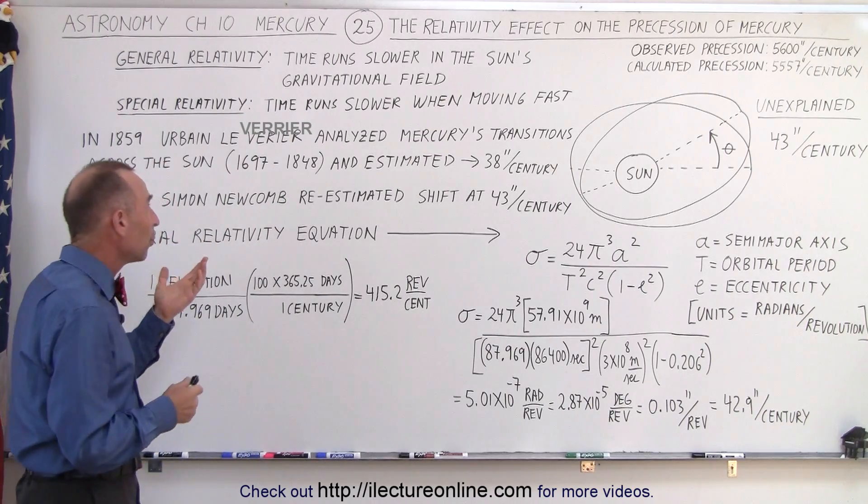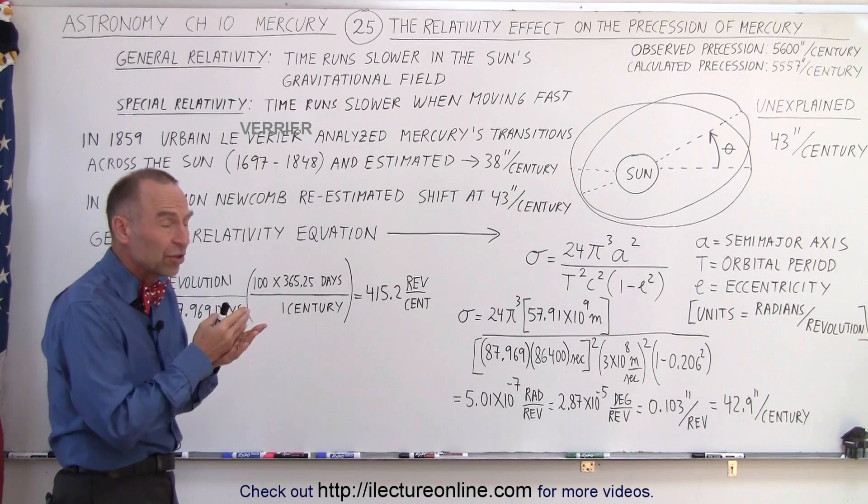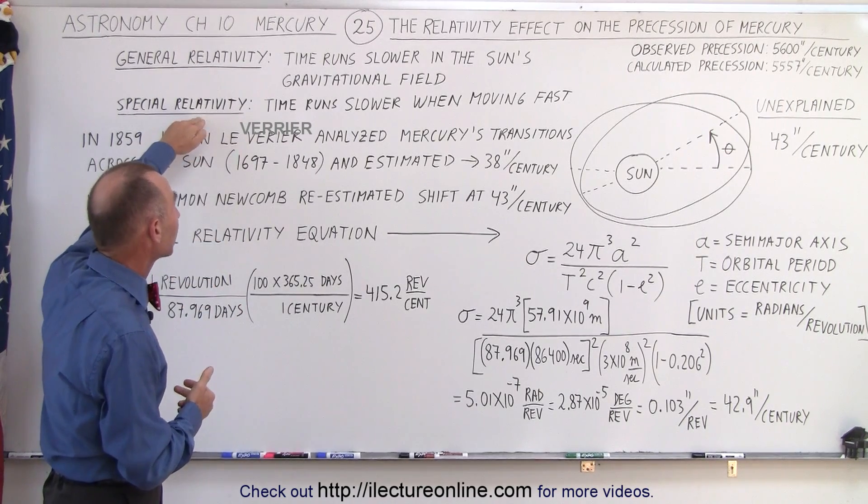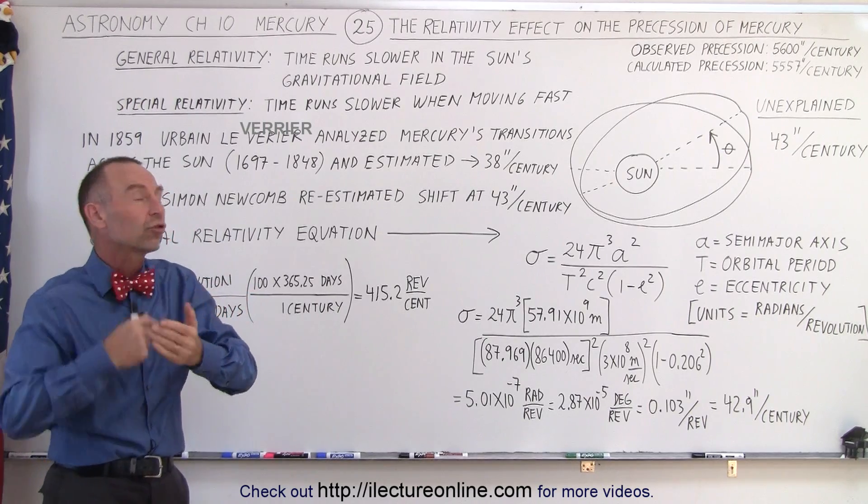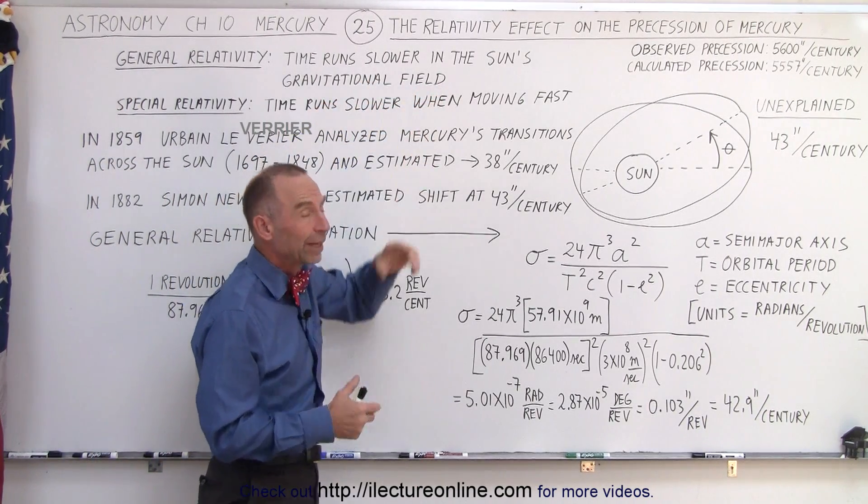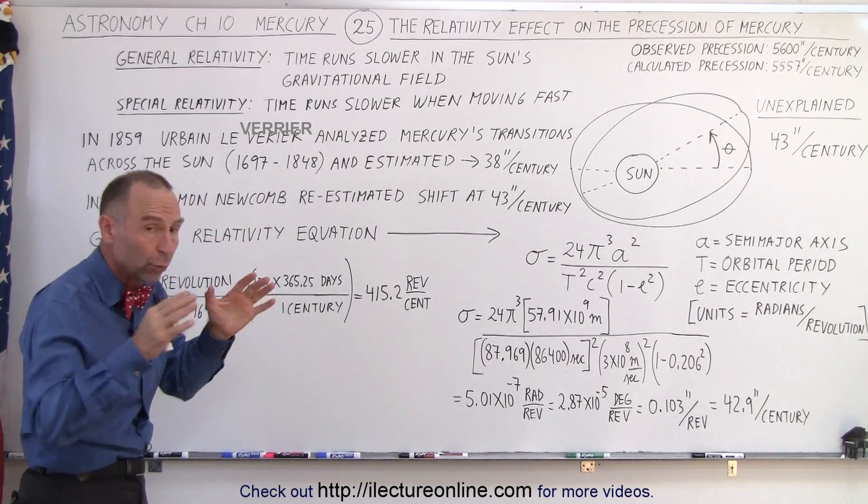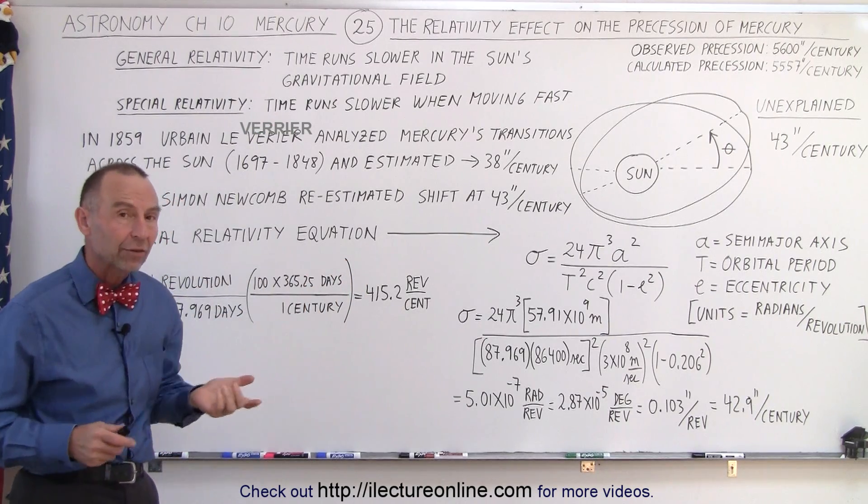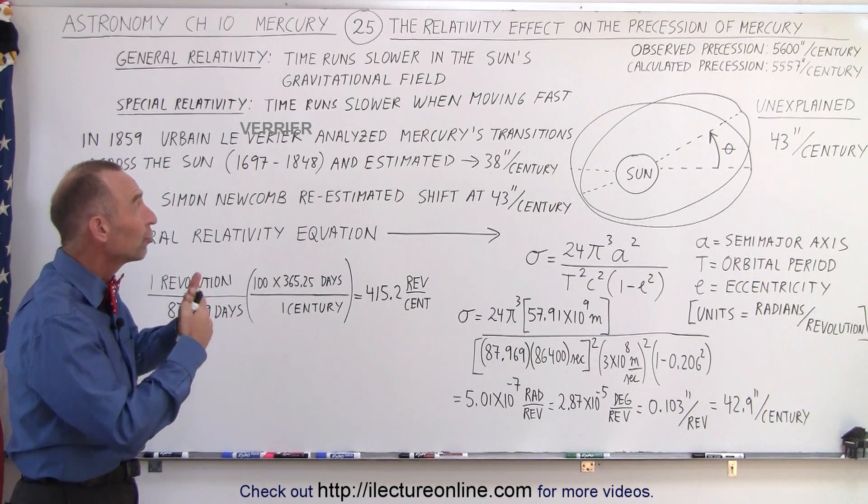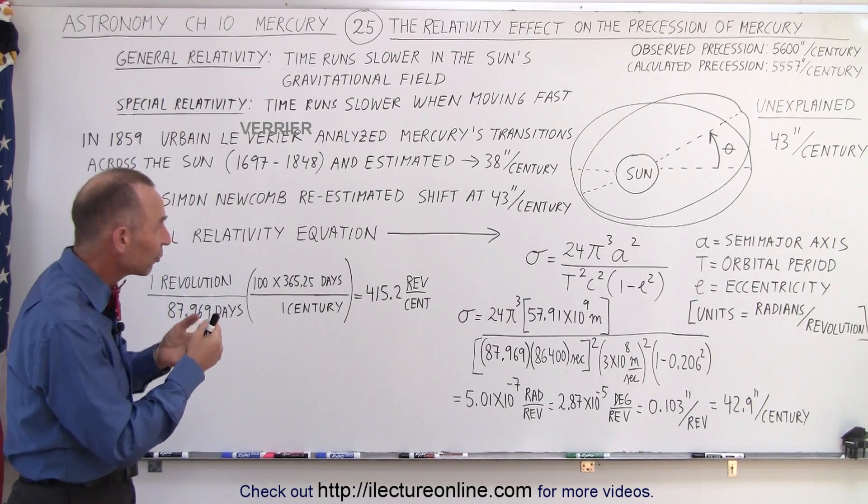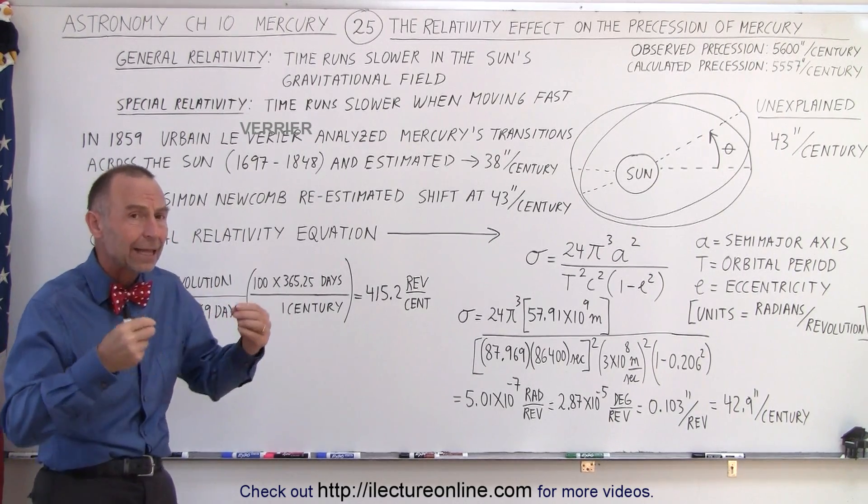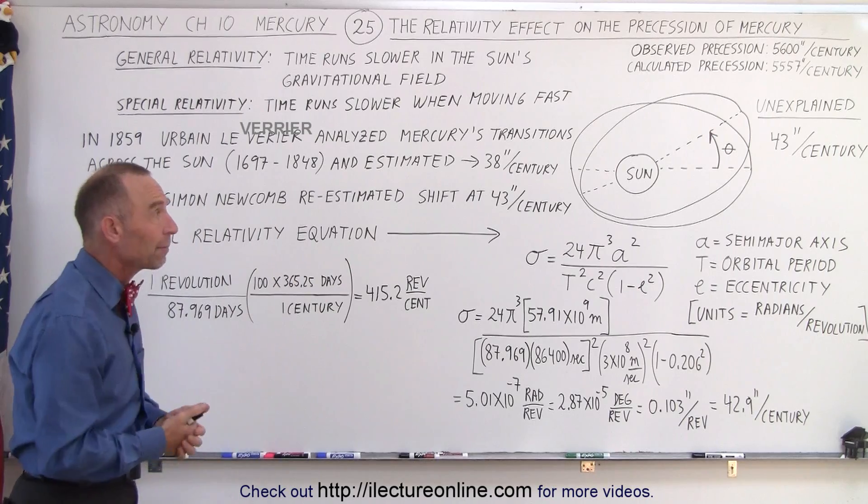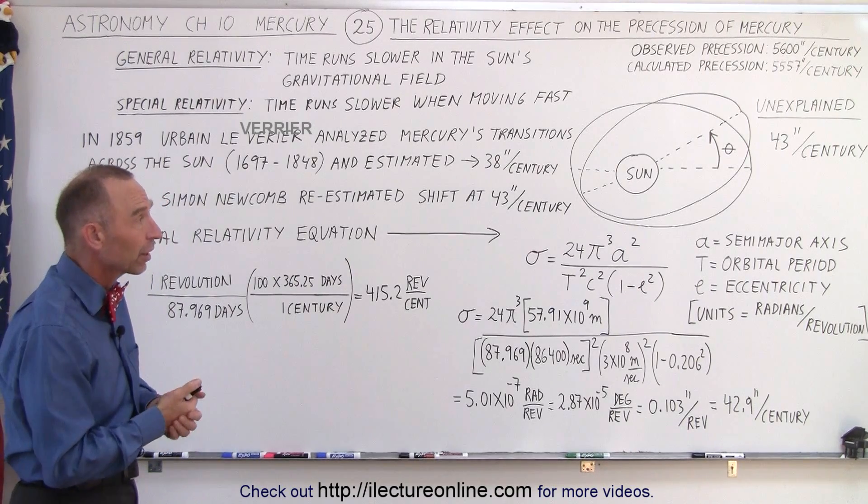Now the reason why there's a difference is because the general theory of relativity and the special theory of relativity indicates that time will run slower. First of all because Mercury is closer to the strong gravitational force of the Sun which tends to slow down time, and also Mercury orbits around the Sun much faster than any other planet which again would have an effect due to the special theory of relativity, again making time move slower in both cases. And that time discrepancy is a large factor in describing why there's a difference of 43 arc seconds per century.